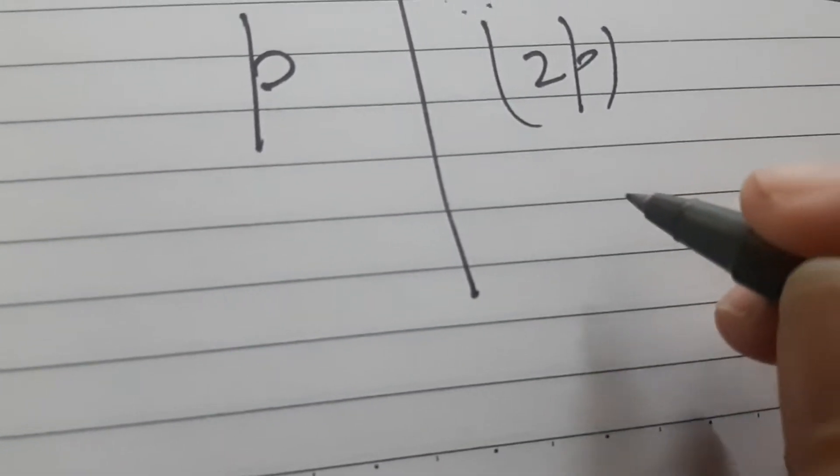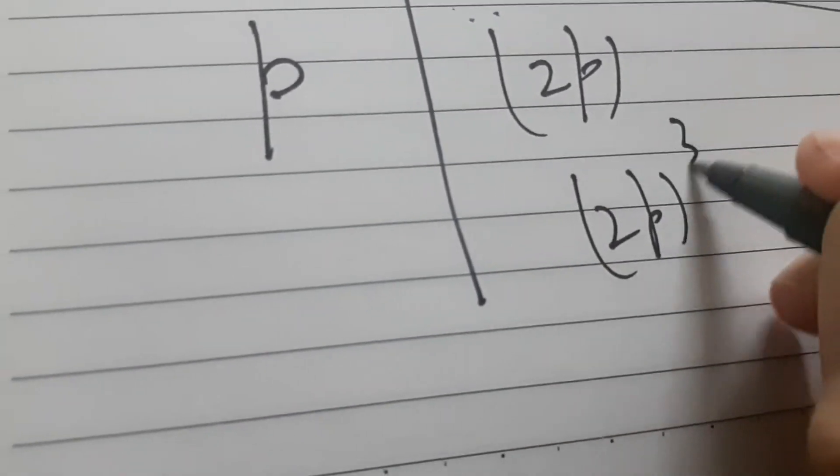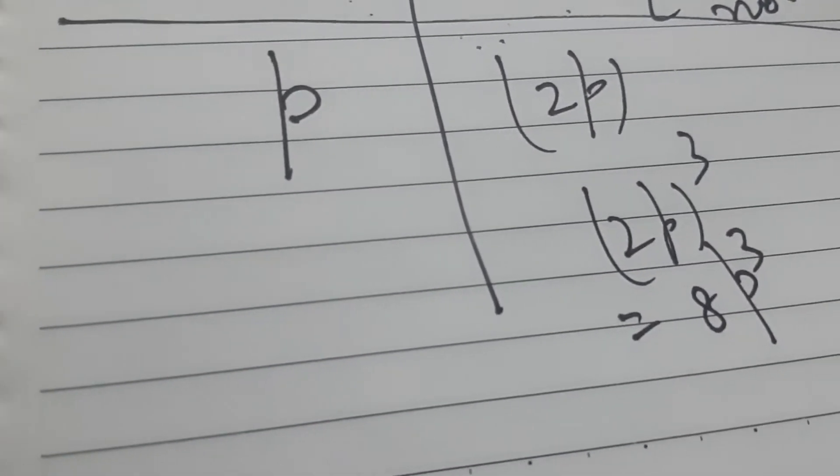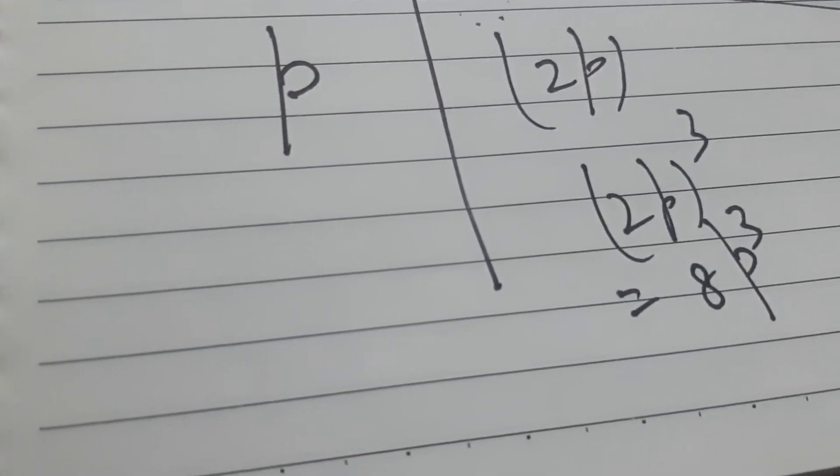Yes, quickly tell me. So 2p cube will be 8p cube. So what is the answer? Yes, it becomes 8 times the original number.